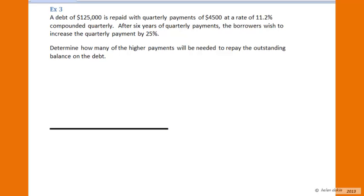Beginning with the time diagram, we've got a debt of $125,000. So at today's date, we've got a $125,000 loan. We also know that we have quarterly payments of $4,500 applied against that loan. So we've got one, two, three quarterly payments of $4,500 per quarter.